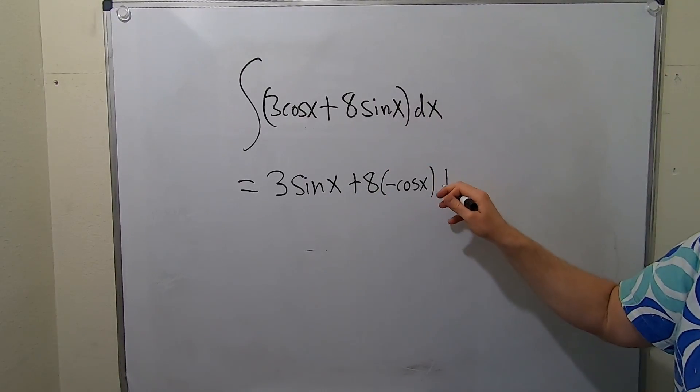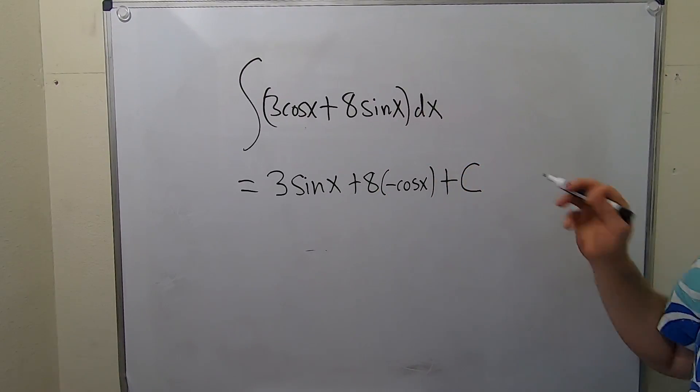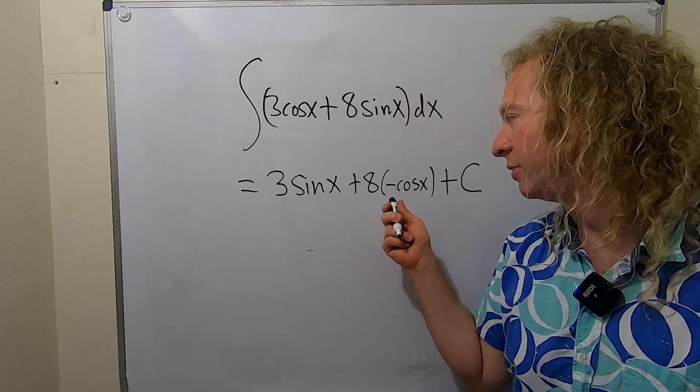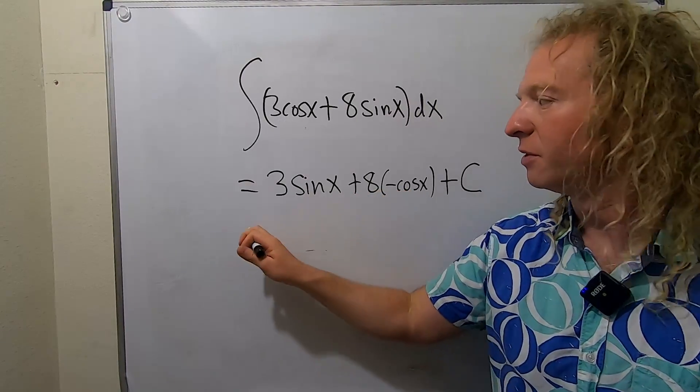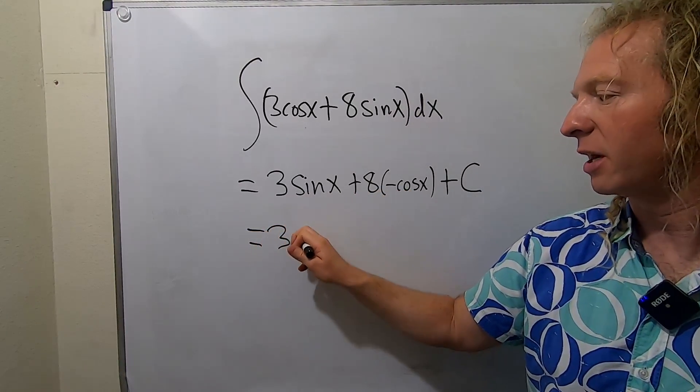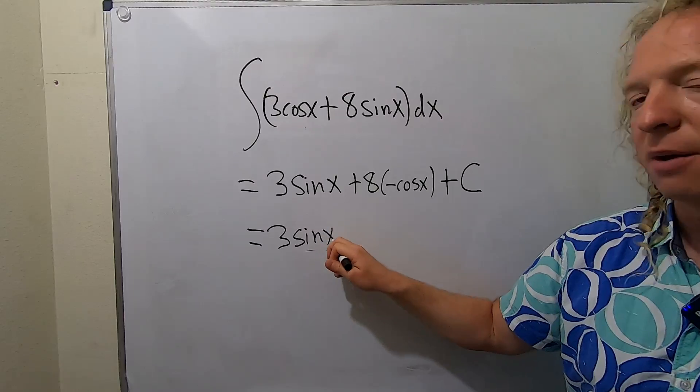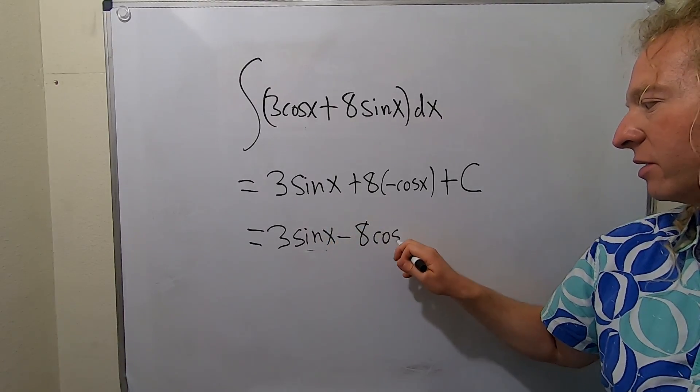And don't forget, our constant of integration, capital C. The last thing maybe we can do is put the negative here. So this is equal to 3 times the sine of x minus 8 times the cosine of x.